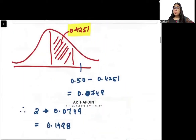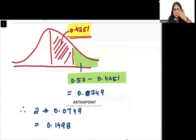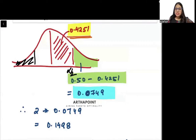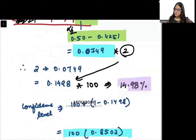Now to find the alpha value for part B: the area is 0.4251, so 0.5 minus 0.4251 equals 0.0749. This is alpha by 2, since it is a two-tail value. Multiplying by 2 gives alpha equals 0.1498, or 14.98 percent.